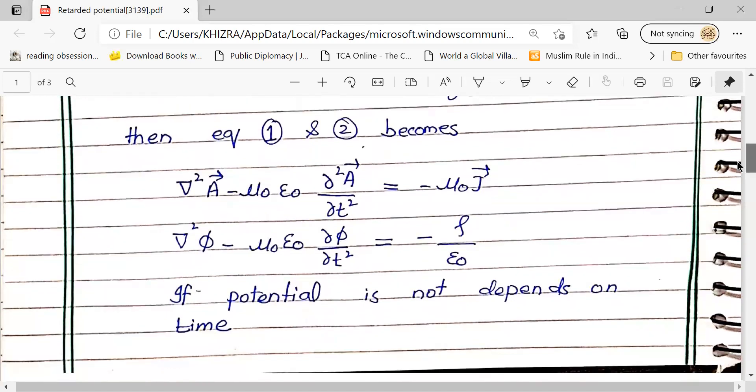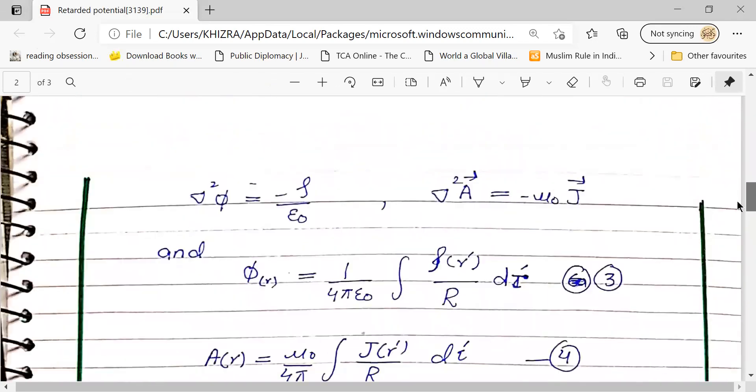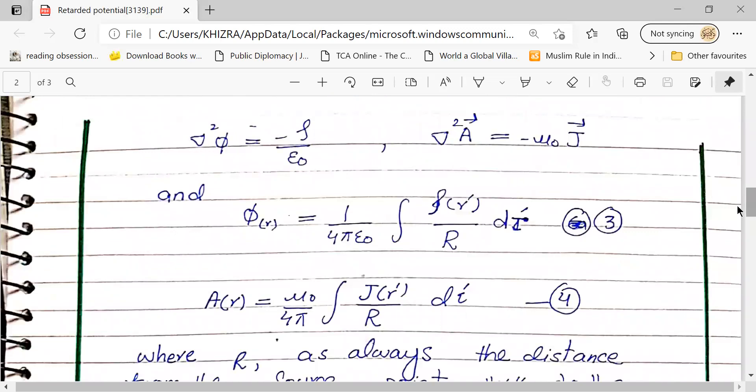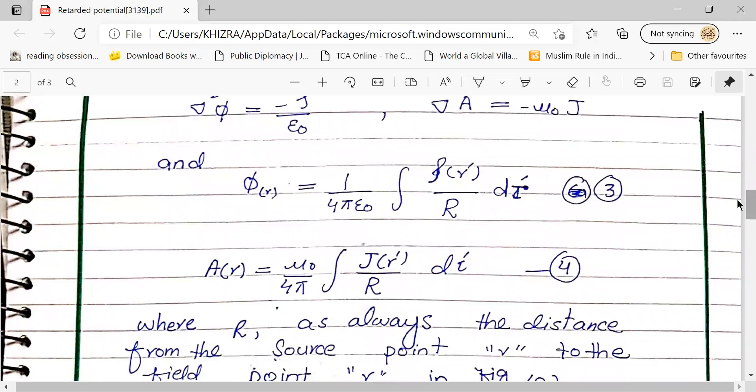If potential is not dependent on time - when the time part is removed, we have scalar potential and vector potential equation. This is Poisson equation form now. In Poisson equation we can convert here - d tau, and r has distance from the source.